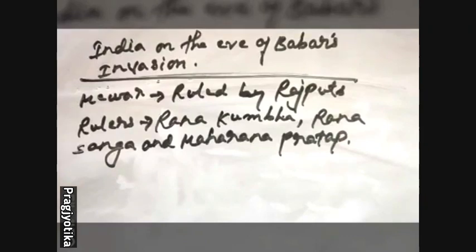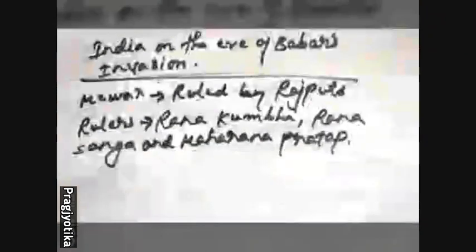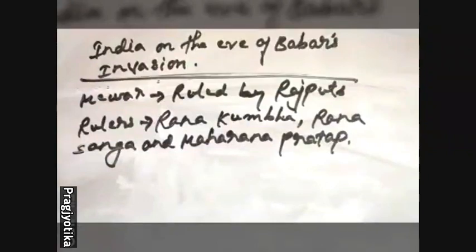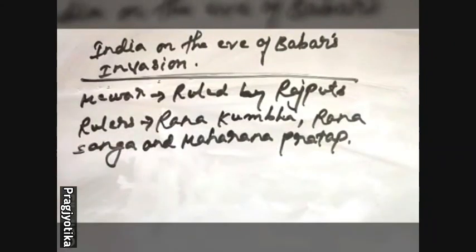So we discussed about Delhi, Sindh, Punjab, and Kashmir. Now another important kingdom was Mewar. Mewar was ruled by Rajput kings, and some of its famous rulers were Rana Kumbha, Rana Sangha, and Maharana Pratap. Rana Kumbha was one of the great generals and also a scholar. He was very well-versed in different subjects like logic, grammar, mathematics, metaphysics, and also political science.